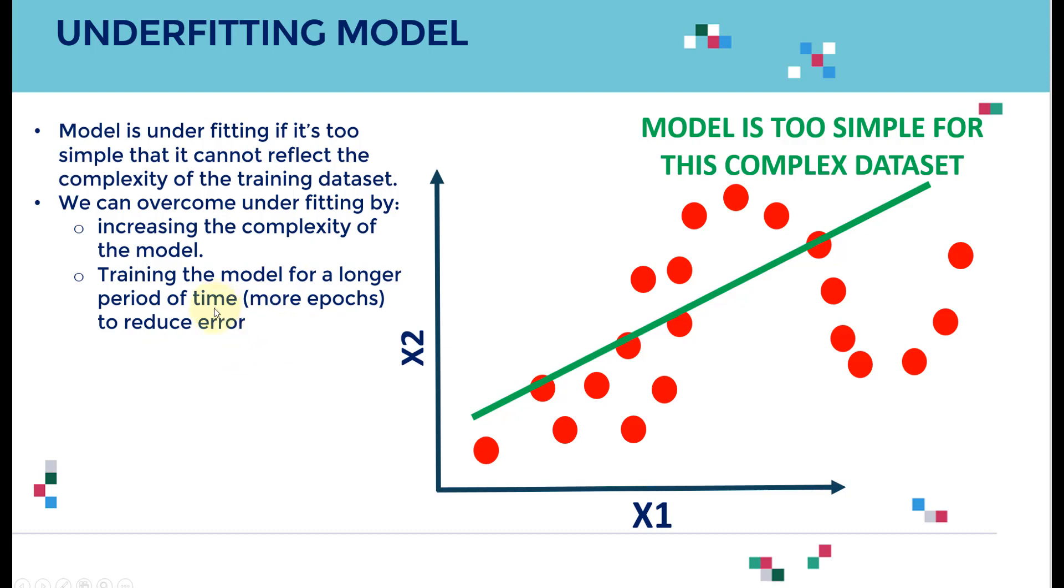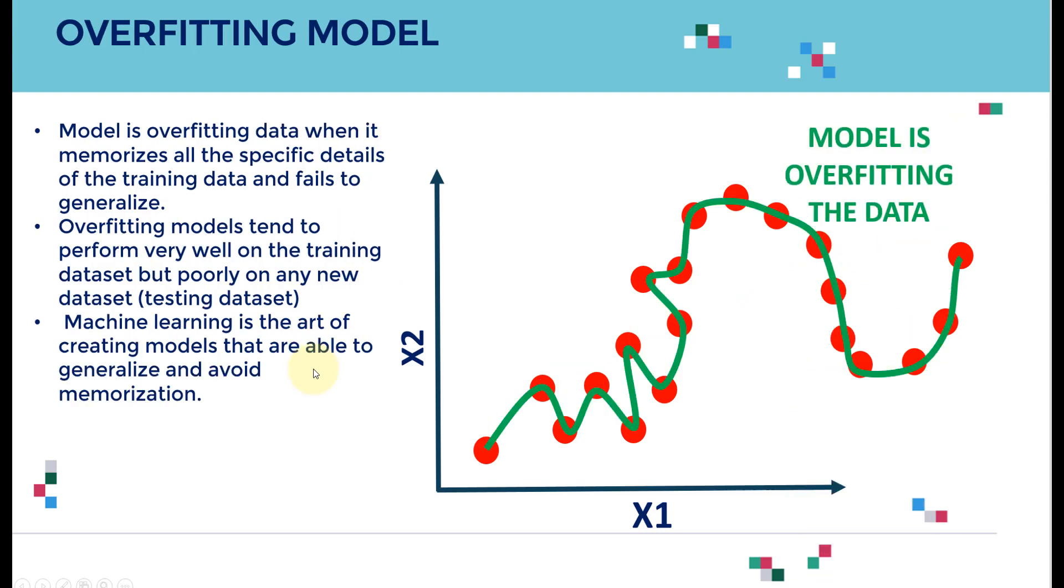These are underfitting models. Another extreme is overfitting models. I have the same data points, and now I went all in—a tenth order polynomial model, very complex, like a massive artificial neural network with tons of neurons and nonlinear activation functions. Now I've been able to fit a perfect fit to the training data.